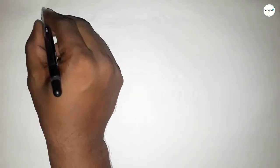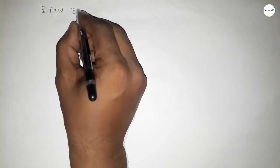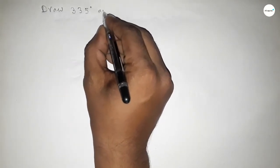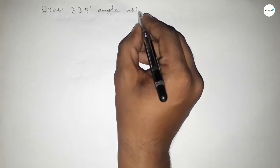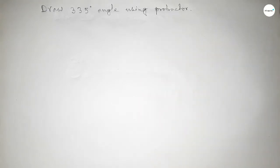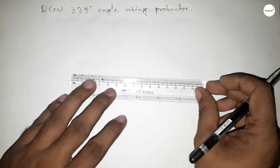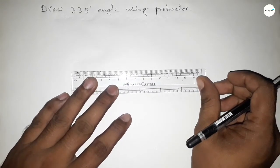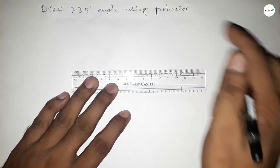Hi everyone, welcome to SSR Classes. Today in this video, we have to draw a 335-degree angle using a protractor. Let's start the video. First of all, we have to draw a straight line of any length.